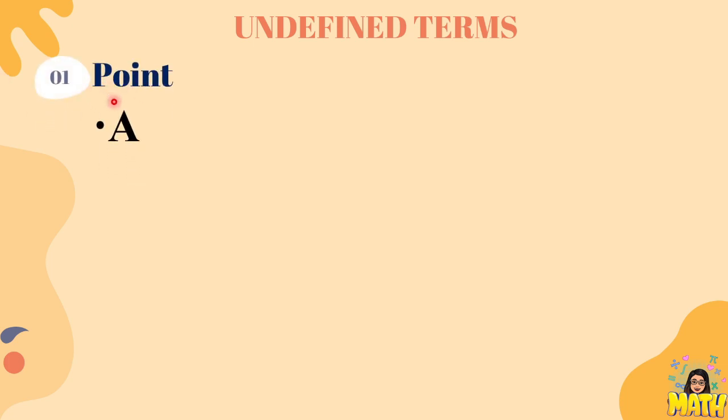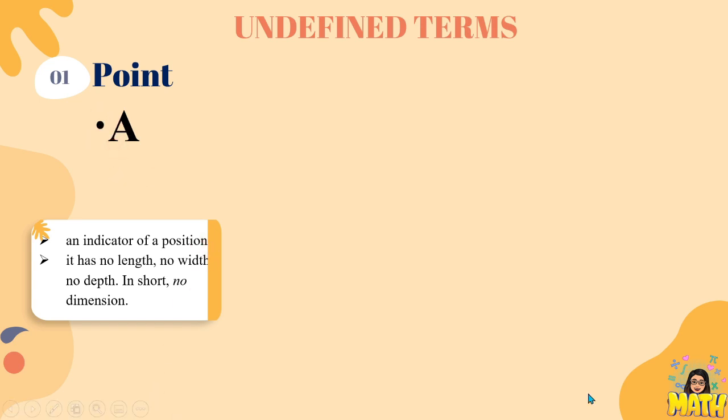Una na dyan ang tinatawag nating point. A point is an indicator of a position. It has no length, no width, no depth. In short, wala itong dimension. As you can see here, a point is represented by a capital letter.